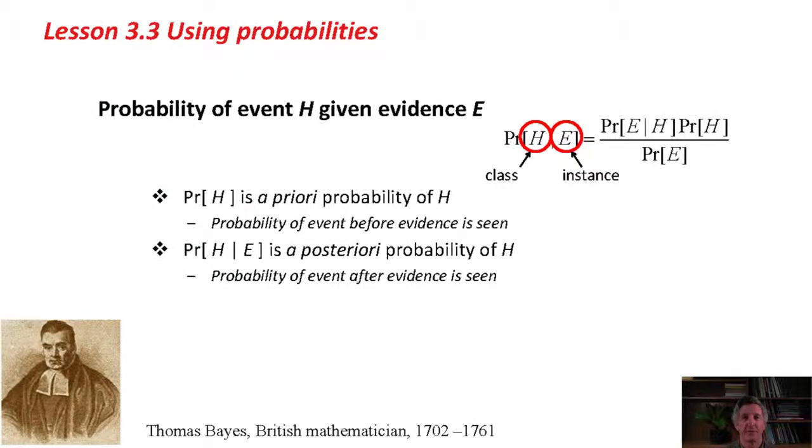There's a theorem in probability called Bayes Theorem, after this guy, Thomas Bayes, from the 18th century. It's about the probability of a hypothesis, H, given evidence. In our case, the hypothesis is the class of an instance, and the evidence is the attribute values of the instance.